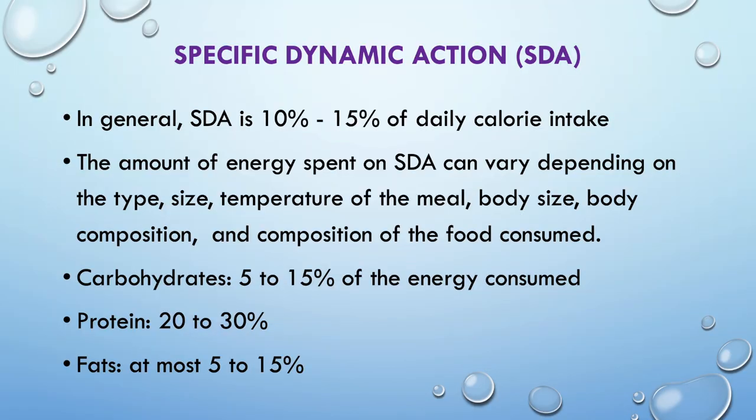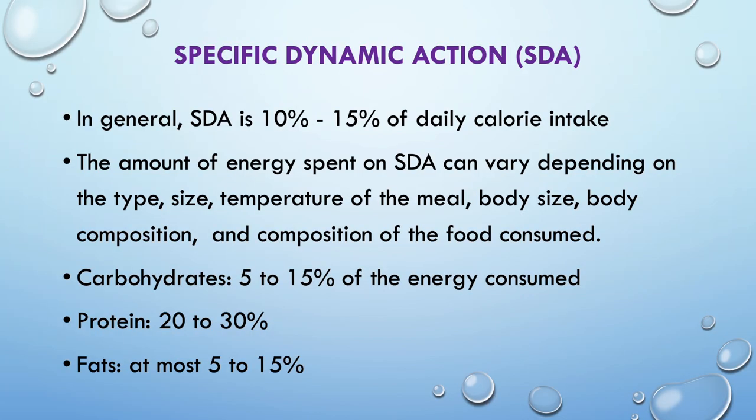The amount of energy spent on specific dynamic action can vary depending on the type, size, and temperature of the meal, as well as body size, body composition, and the composition of the food consumed. For carbohydrates, SDA is 5 to 15 percent, and for fat it is also 5 to 15 percent, whereas for protein SDA is 20 to 30 percent.